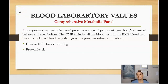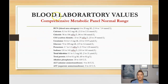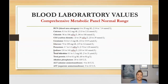Moving on to the comprehensive metabolic panel. As mentioned, the CMP contains all of the blood tests in the basic metabolic panel — the BUN, calcium, chloride, carbon dioxide, creatinine, glucose, potassium, and sodium — and all those norms are the same here in the CMP as well.